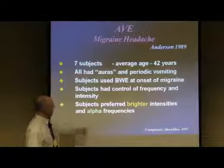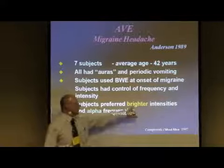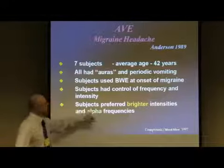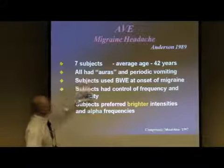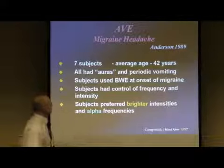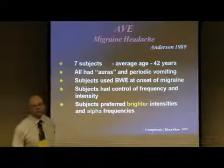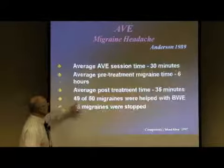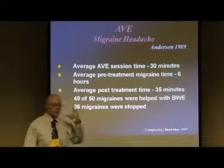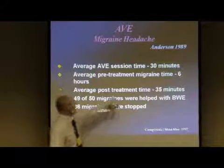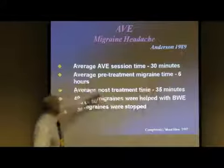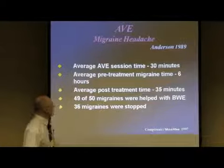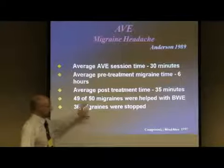Here's a migraine study. Believe it or not, in addition to using alpha frequencies, the participants preferred brighter intensities — totally backwards to what migraine is like — but they were dissociating out of their migraine. This was Anderson out of England, Duncan Anderson. They recorded 49 migraines across seven subjects, roughly seven migraines per person. When they felt the aura coming on, they were to put on the gear and run it in alpha for about 30 minutes. Pre-treatment migraine duration was roughly six hours; post-treatment was roughly 35 minutes. 49 of those 50 migraines were helped and 36 were actually stopped in their tracks.